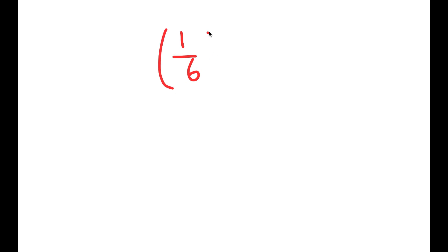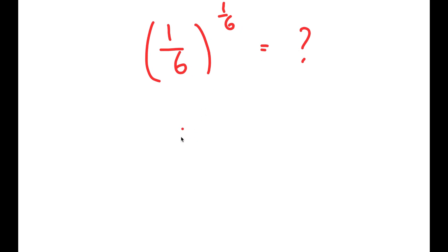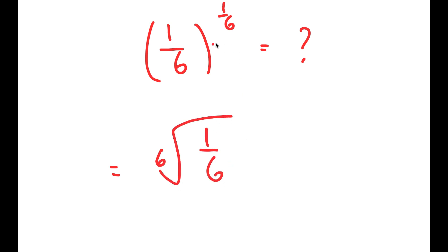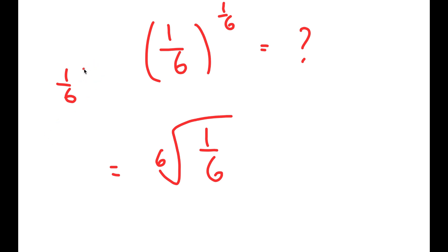In this video, I'm going to solve the problem 1 over 6 to the power of 1 over 6. To solve this, I'm going to first start by rewriting this as the 6th root of 1 over 6, because 1 over 6 to the power of 1 over 6 is the same thing as the 6th root of 1 over 6. If this was 1 over 6 to the power of 1 over 7, this would be the 7th root of 1 over 6. So 1 over n is going to be the nth root of that number.